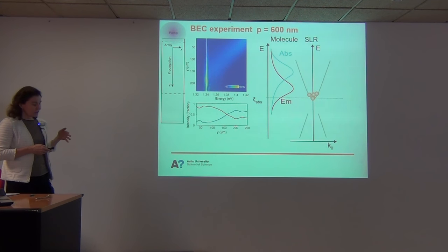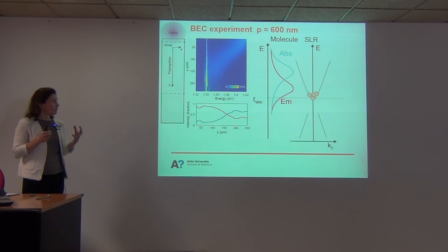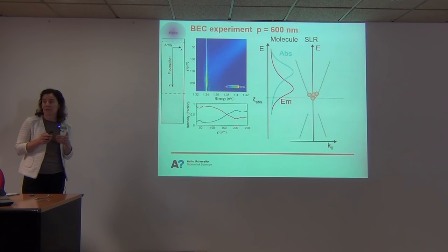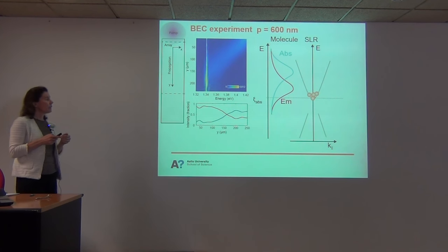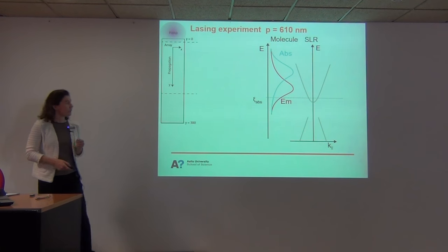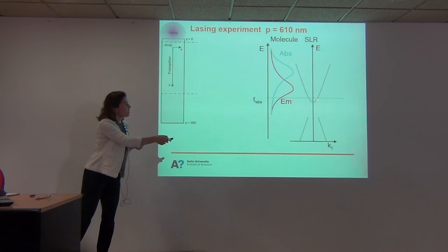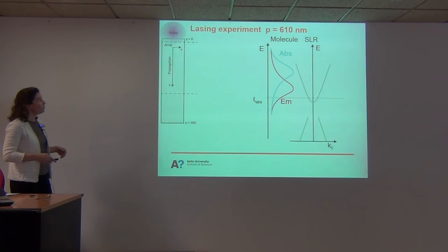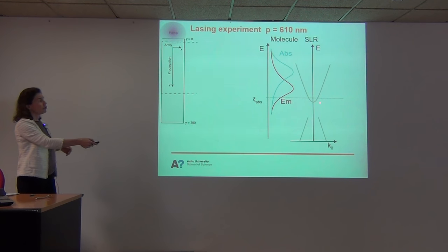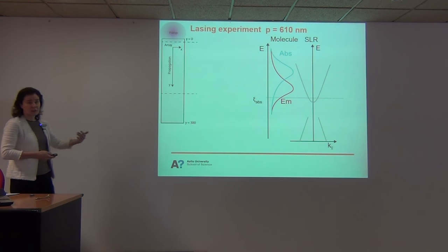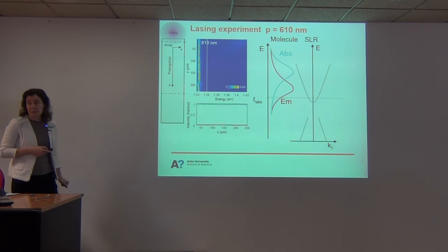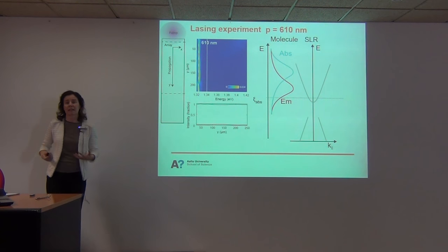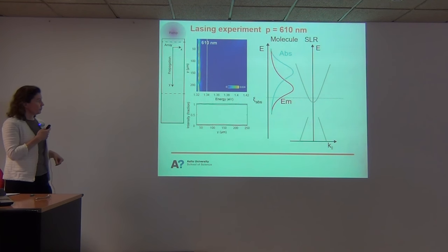One more really nice thing in our system: there is the important question of how this is different from lasing. In our system we can also realize lasing and see that it's quite different. For lasing we put the band edge well below the absorption end, so basically for the relevant parameters we don't have any absorption — we have a huge gain from the beginning at the band edge. In this case already from the beginning of the array you get only population at the band edge so it starts lasing immediately.